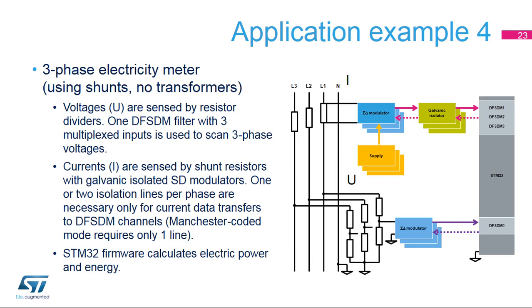This example shows a three-phase electricity meter design using shunt resistors for sensing current, eliminating the need for expensive current transformers. Voltages are sensed by three resistor dividers and external Sigma Delta modulators, while currents are sensed by three shunt resistors, each monitored by one Sigma Delta modulator. Because each Sigma Delta modulator operates at high-phase voltage, galvanic isolation is used for data transfers into the DFSDM. Manchester-coded protocol with an internal clock source requires only one isolator per phase, while SPI format requires two isolators per phase.